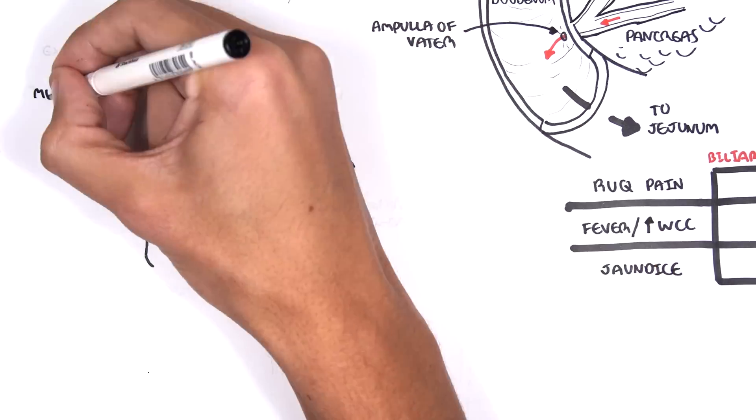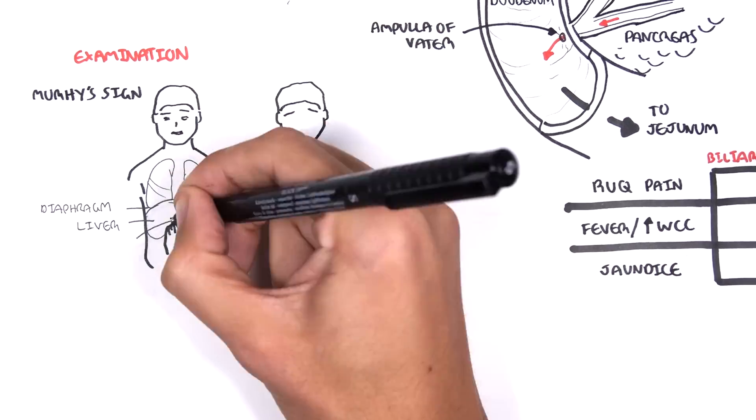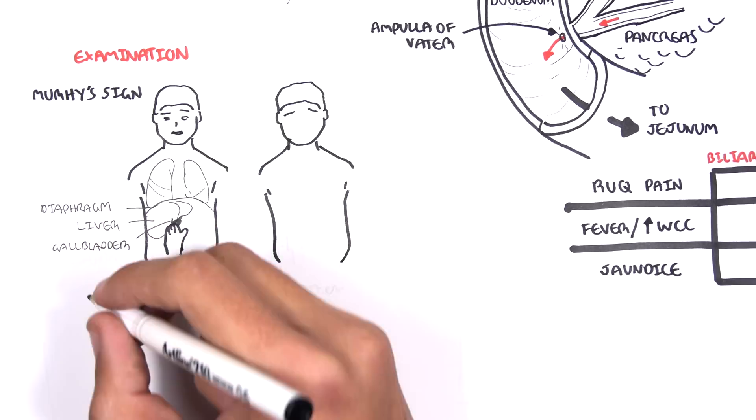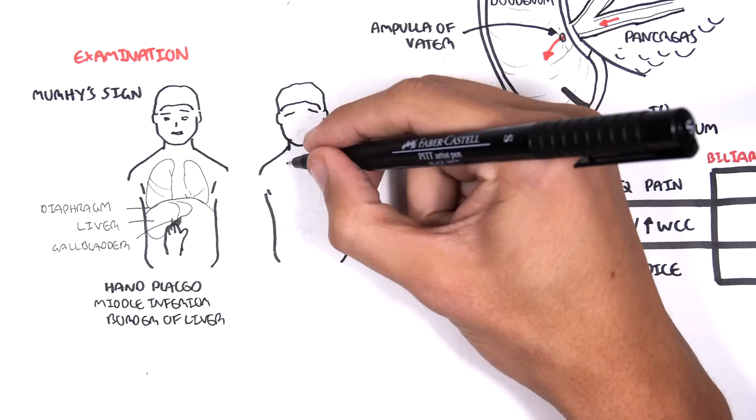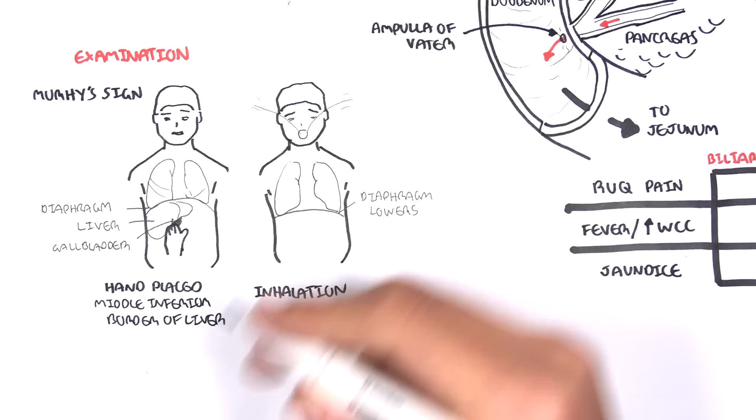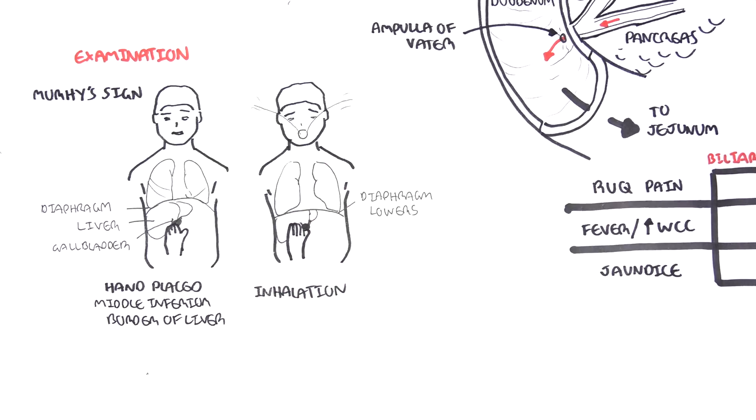Murphy sign is where a hand is placed at the mid-inferior border of the liver. The patient is then asked to take a deep breath in. The diaphragm lowers during inspiration. And with our hand being placed where it is, it will irritate the gallbladder as the diaphragm pushes the gallbladder down. And this will trigger pain. The patient becomes startled and stops breathing in.